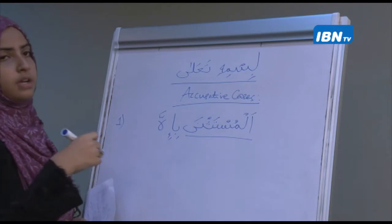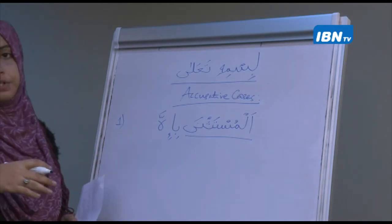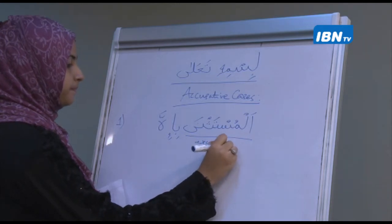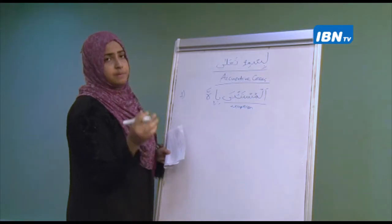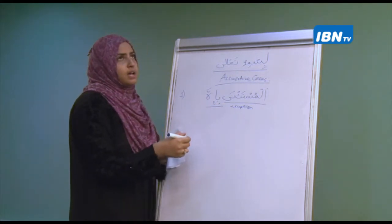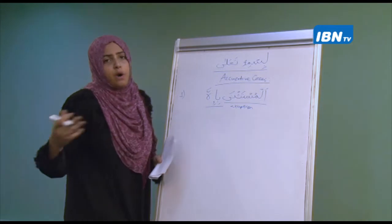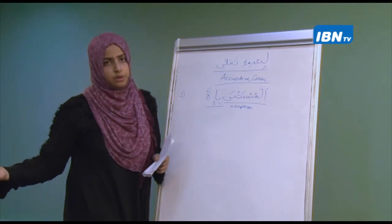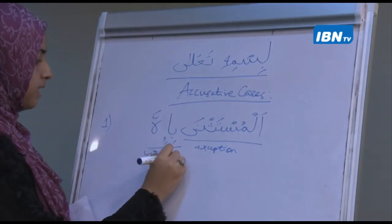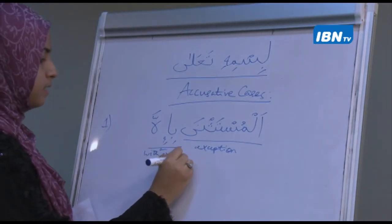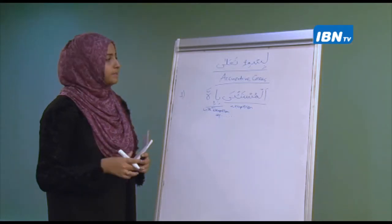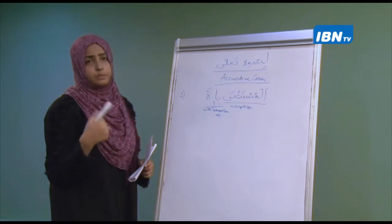So what do we mean by المستثنى بإلا? مستثنى means something that is an exception. بإلا means 'with exception of so and so.' We'll be looking at examples so you will understand better, and of course this is also one of the cases where you will find either a fatha or fathatain.